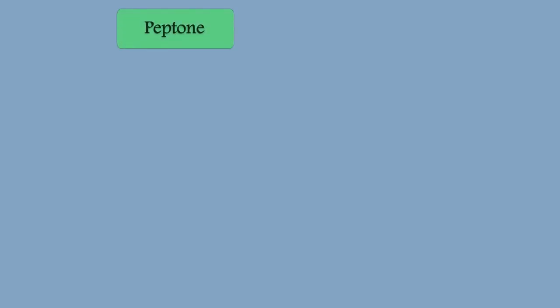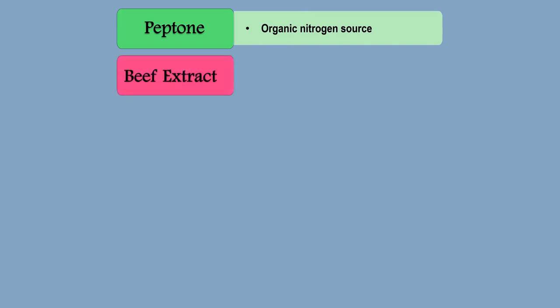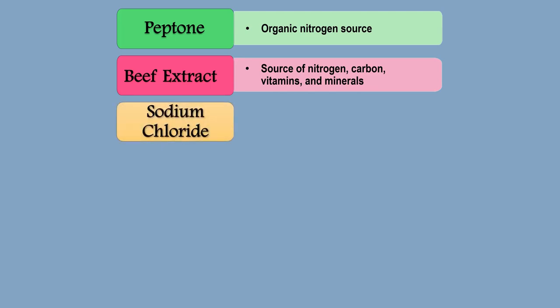The first ingredient is Peptone. It is the source of organic nitrogen. The second ingredient is Beef Extract. Beef extract is a source of nitrogen, carbon, vitamins, and minerals.